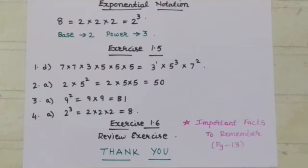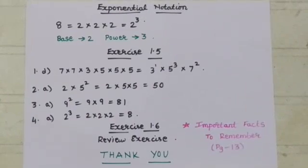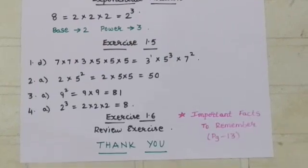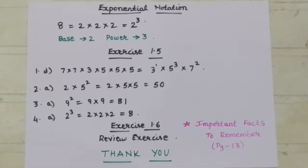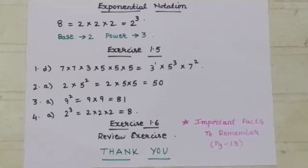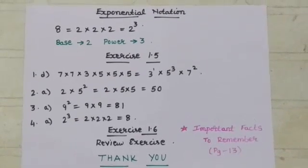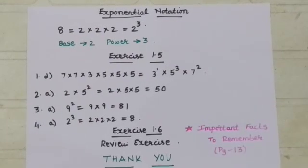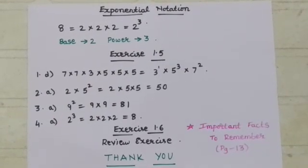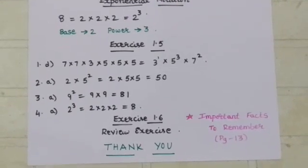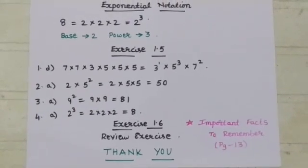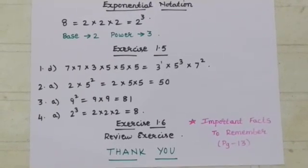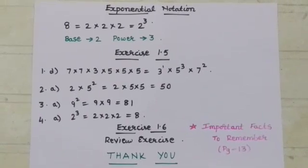Question number 3: You are supposed to write the squares. Square means any number raised to the power 2. Any number raised to the power 2 is known as square. You are supposed to write 9 square. That is, 9 into 9 which is equal to 81. Similarly, question number 4: Write the cubes. Cube means any number raised to the power 3. That means the given number is written 3 times. 2 cube equals 2 into 2 into 2 which is 8. You will complete this exercise.